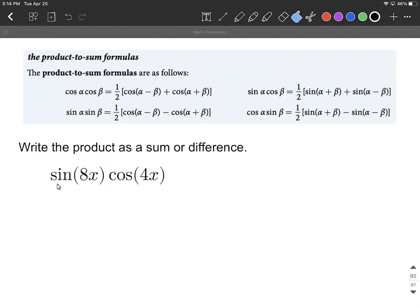We're going to identify we have sine multiplied by cosine. That's pointing us towards this formula in the very top right hand side.